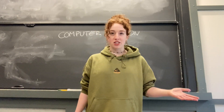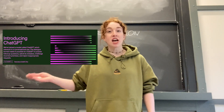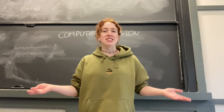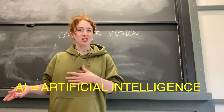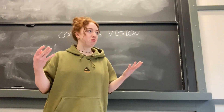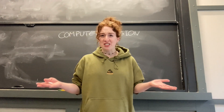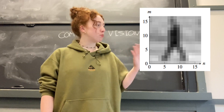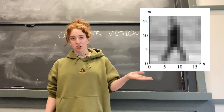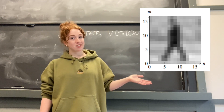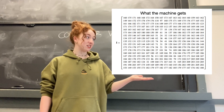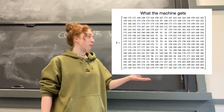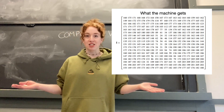AI seems to be everywhere these days, from ChatGPT to DALL-E to Snapchat's new AI bot. But how exactly does artificial intelligence think intelligently? Do computers think and reason the same way that we do? For instance, look at this blurry picture of a person. While we see this, a computer sees this. How could a computer possibly understand that this jumble of numbers represents a human being?